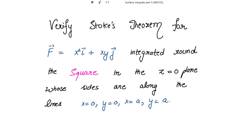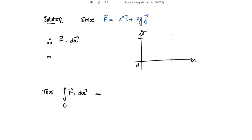We need to verify the Stokes theorem for this function, integrated round the square in the z=0 plane, whose sides are along the lines x=0, y=0, x=a, and y=a. This is the x-axis and y-axis, and this is the line x=a and y=a. Let this point be the origin, this point A be (a,0), point B be (0,a), and C has coordinates (a,a). This is the line y=0 and this is x=0.